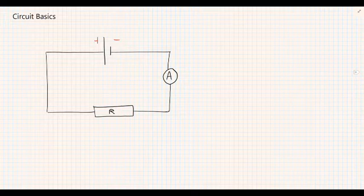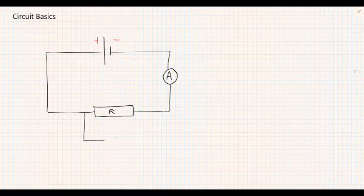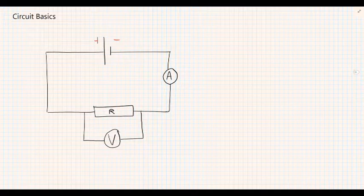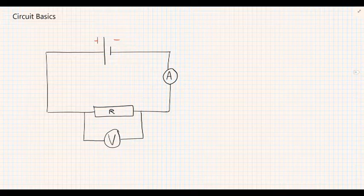Across our resistor we have a voltmeter, and the voltmeter's job is to measure the voltage or the potential difference. A voltmeter must always be wired in parallel, and the ammeter must always be wired in series.